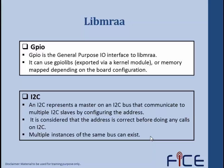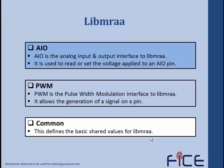In I2C, a master communicates to various I2C slaves using the I2C bus by configuring the address. These addresses are always correct before the master makes a call to communicate to any slave. On our Galileo board for I2C, we have IO18 and IO19 — IO18 acts as the data line while IO19 acts as the I2C clock. Moving further, AIO is the analog input and output interface to libmraa, used to read or set the voltage applied to an AIO pin.